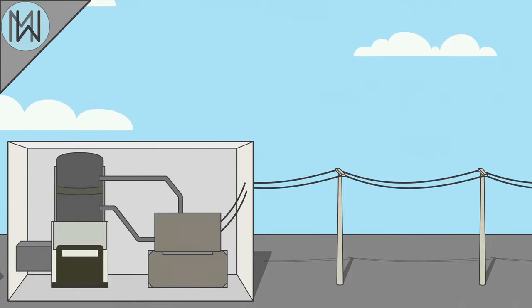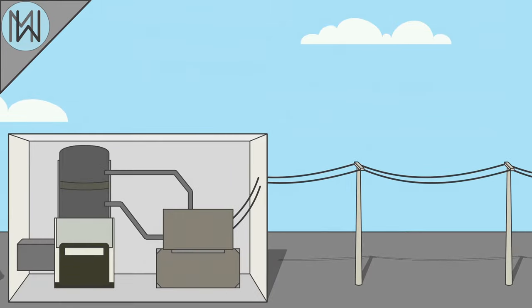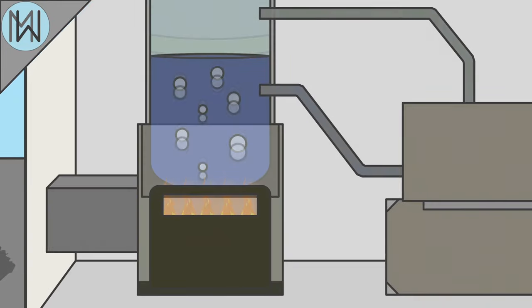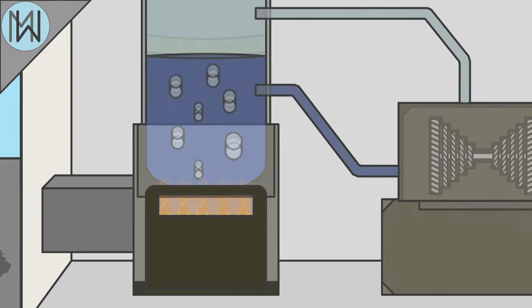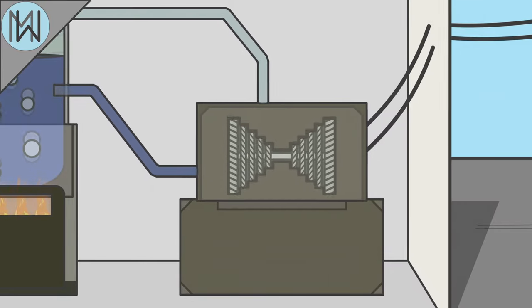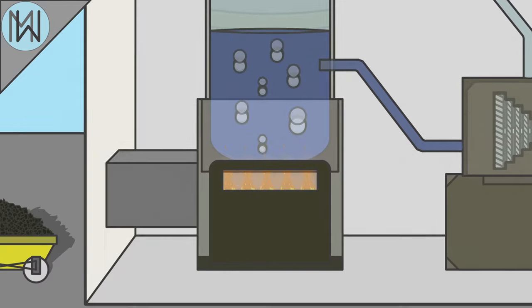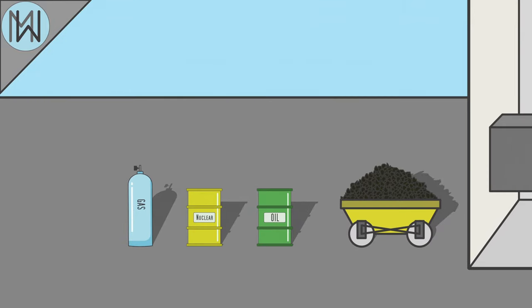Almost every kind of power plant converts heat into electricity by boiling water to produce steam, which turns a turbine that generates electricity. The differences are really only in the fuel source, not the actual conversion process.